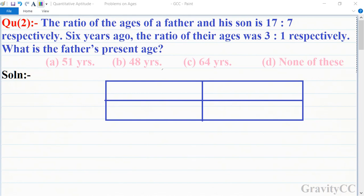Quantitative aptitude chapters, problems on ages, question number two. The ratio of the ages of a father and his son is 17:7 respectively. Six years ago, the ratio of their ages was 3:1 respectively. So what is the father's present age?